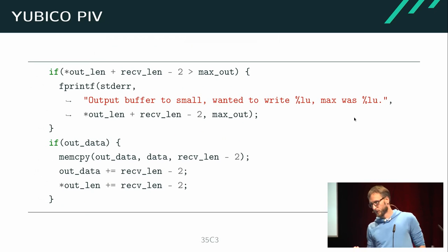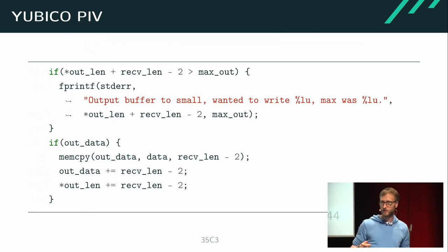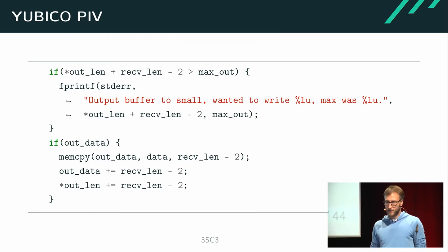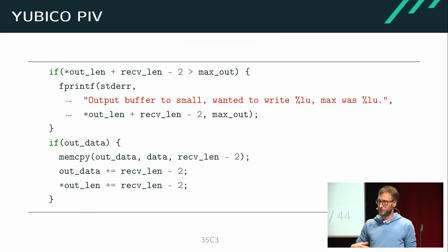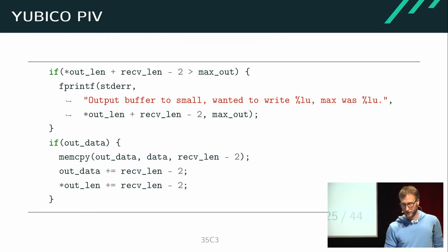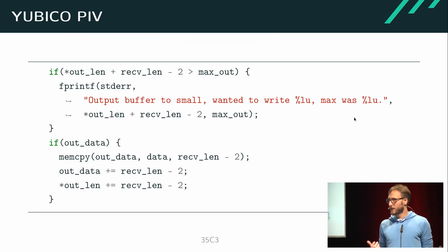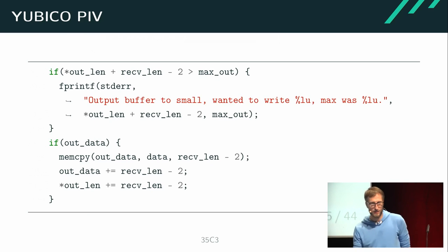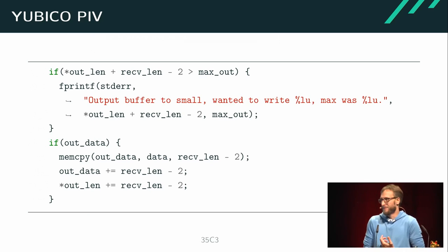Another vendor is Yubico. They sell small devices combining a smart card and smart card reader in a USB stick form factor. One of their drivers has a helper function used every time data is retrieved from the smart card. It does a memcpy of the retrieved data into the caller-supplied buffer. As you can clearly see, they do check whether the data already received is bigger than the buffer size — and if so, they print a nice error message and continue copying into the buffer anyway.